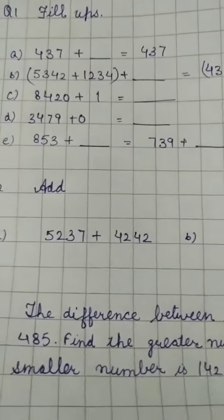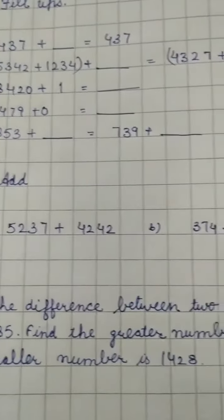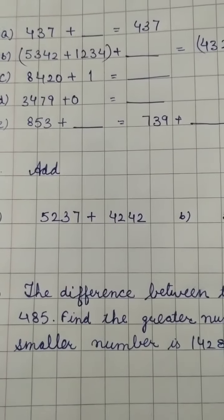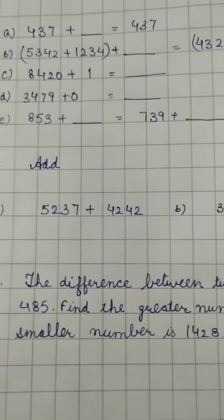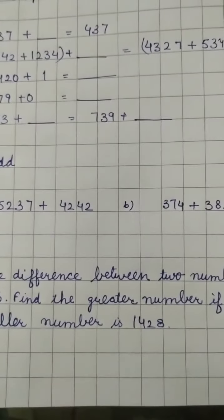Now, last question is question number 3. The difference between two numbers is 485. Find the greater number if the smaller number is 1428.